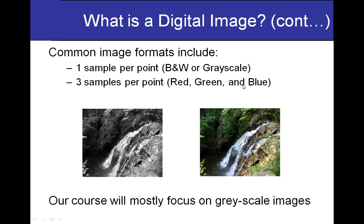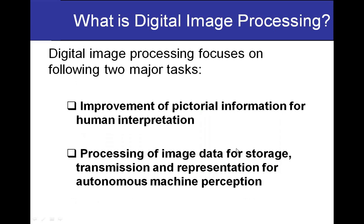When you go to color images, one sample is not sufficient. For color images you must have red, green, and blue information. For keeping the red information — what shade of red is at a particular point — you need one sample for red, one for green, and one for blue. So in the case of color images, at least three samples per pixel are needed to represent such an image.